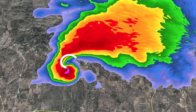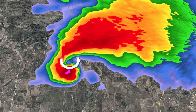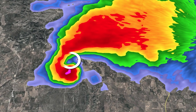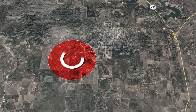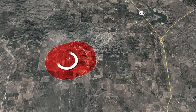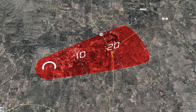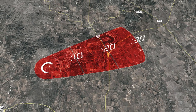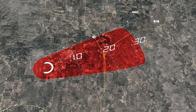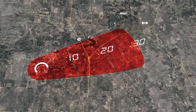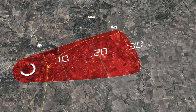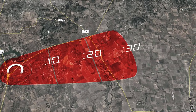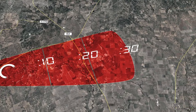Now let's take a look at how Threats in Motion works. A warning polygon is issued at the location of the threat. The warning extends out in time with a 30-minute projection of the storm's path. The warning moves in the same direction and at the same rate as the storm. People are alerted as soon as the warning polygon includes their location.